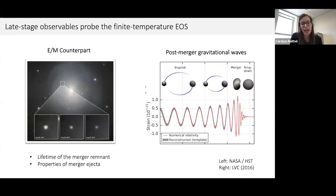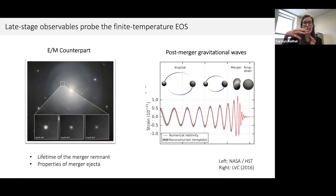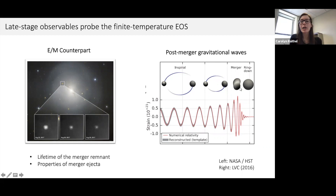Having more or less thermal pressure in the equation of state will influence how long this object can survive, and by extension how much rotational energy it imparts into the ejecta, how much neutrino radiation shines into the ejecta, and properties of the dynamically ejected matter — both how much is ejected and potentially its composition and velocity distribution. If the remnant survives for some time before collapsing, it will be an asymmetric, rapidly rotating object emitting gravitational waves as it oscillates and relaxes to equilibrium. These post-merger gravitational waves are expected to be a quite sensitive probe of the underlying equation of state.